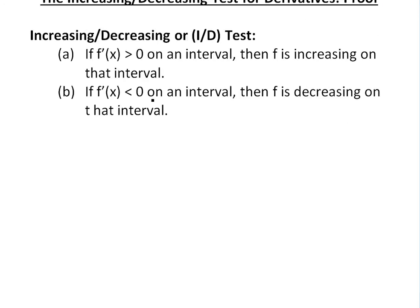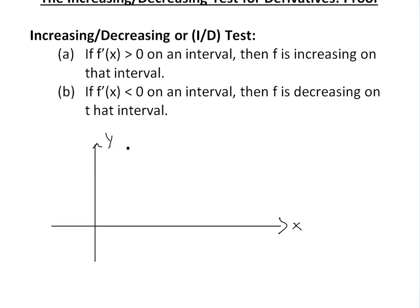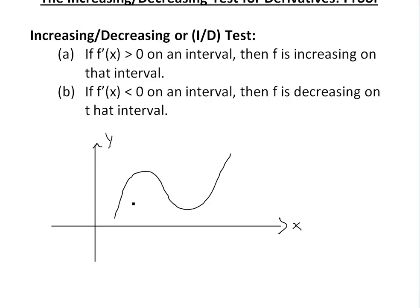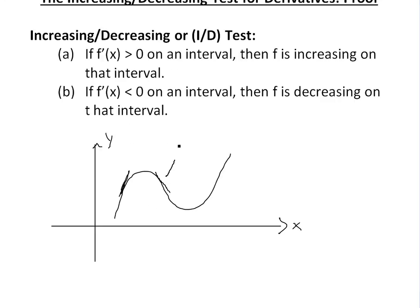The visual proof is pretty straightforward because we know that f prime of x, or the derivative, is basically the slope of a function. If we graph a random continuous function, where the derivative exists, we can see a portion with a positive slope and a portion with a negative slope. A negative slope means the derivative is less than 0, and a positive slope means it's greater than 0. At the peak point, the derivative is going to be 0.